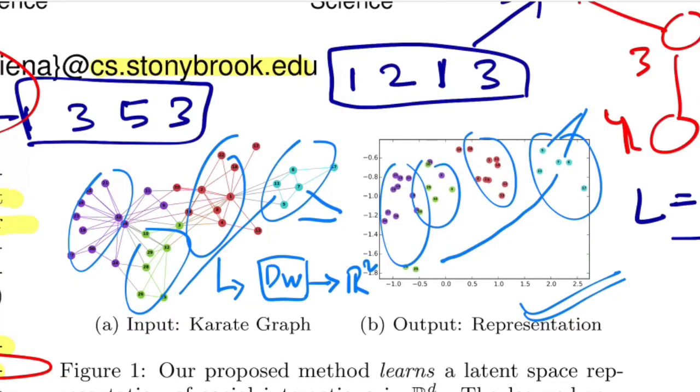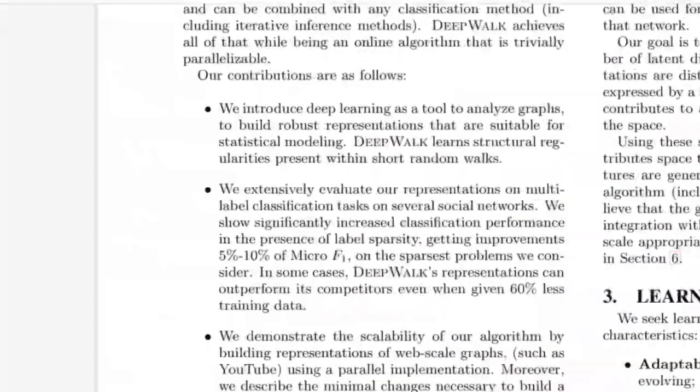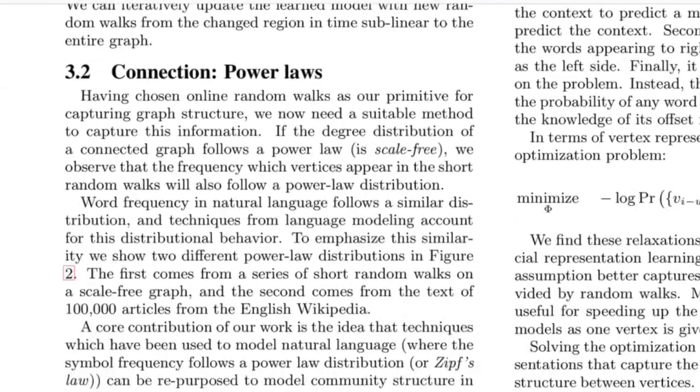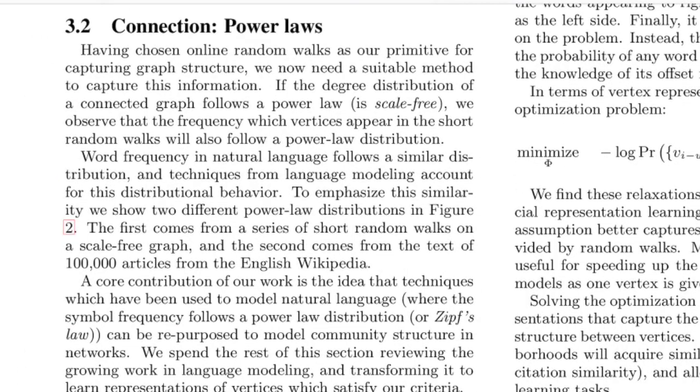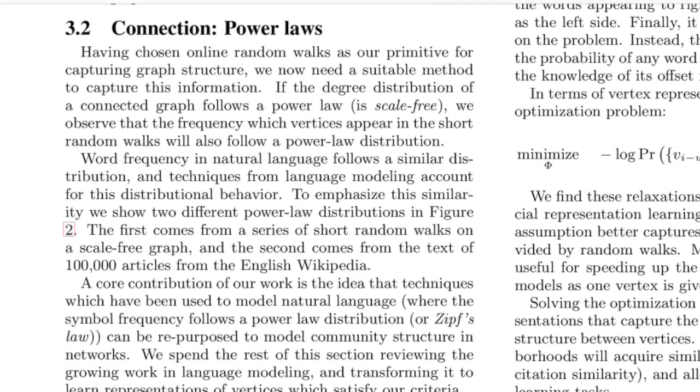Now let's move on to the exact algorithm. But before that, authors also see a connection of power laws that happen in network architecture as well as in language models. So what they say is, we observe that the frequency with which vertices appear in the short random walks follows a power law distribution. Word frequency in natural language follows a similar distribution and techniques from language modeling account for this distributional behavior. They talk about figure two that shows the short random walk scale-free graph and text from English Wikipedia articles.